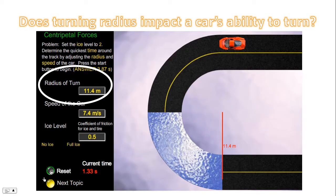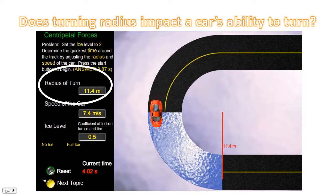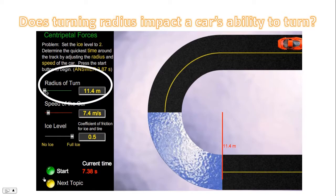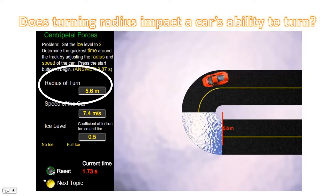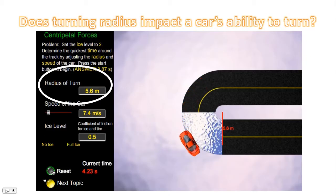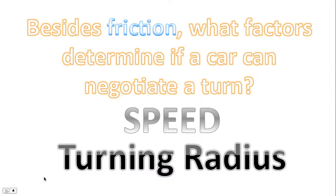Now let's see the effect of radius on the car's ability to turn. We already know that at a radius of 11.4 meters and at 7.4 meters per second, the car can safely negotiate this turn. Let's see, however, as we decrease the radius to 5.6 meters. Notice the car could not complete the turn. Friction, speed, and turning radius all seem to have an impact on a car's ability to turn.